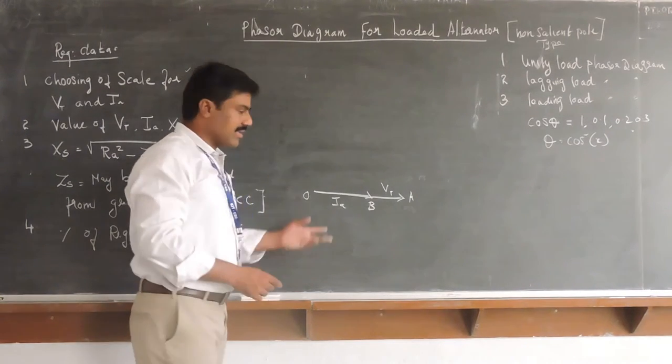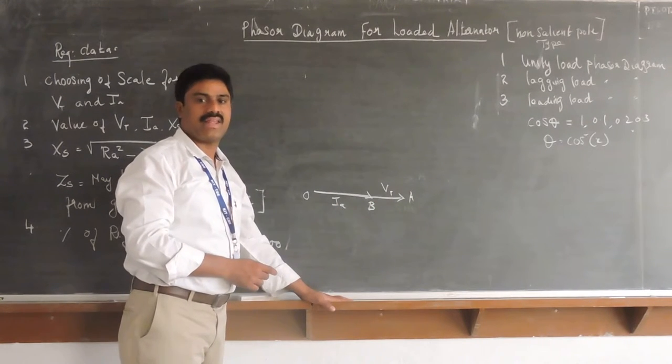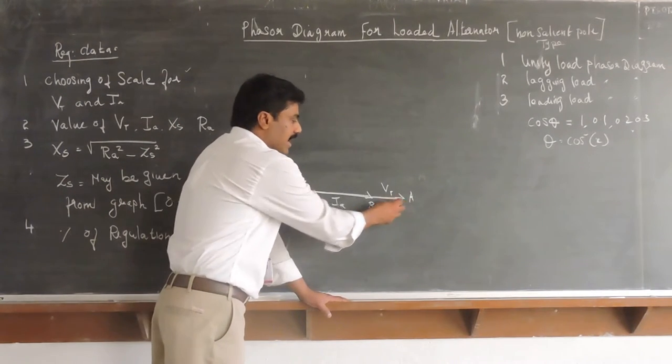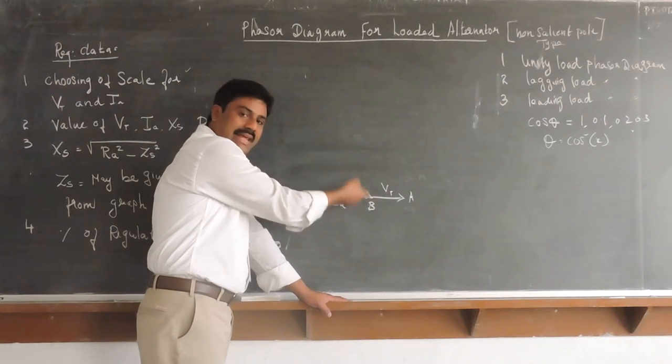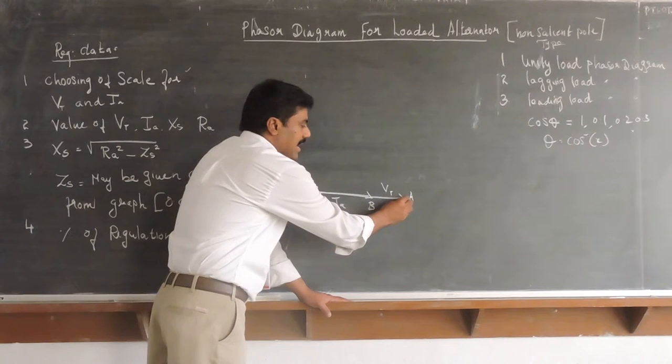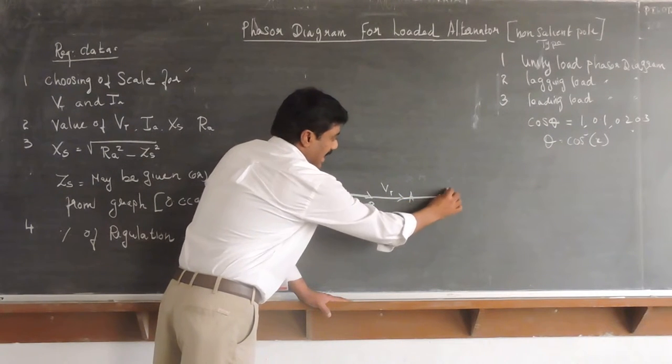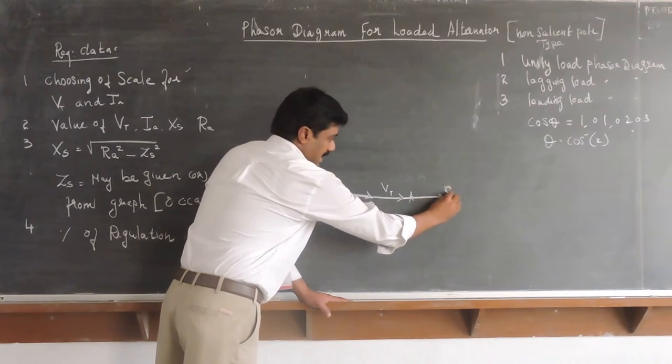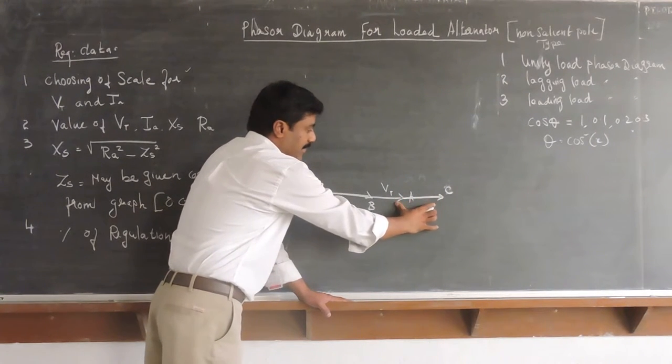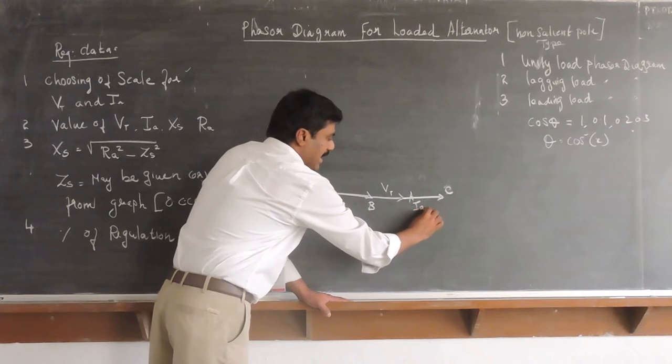And now, the next step, we are going to calculate or draw the value of Ia*Ra vector. Ia*Ra vector will follow the current. Since current lies on the same voltage axis, the drop Ia*Ra will follow from this one. This is going to be C. Now, this AC vector is the vector which represents the value of Ia*Ra.